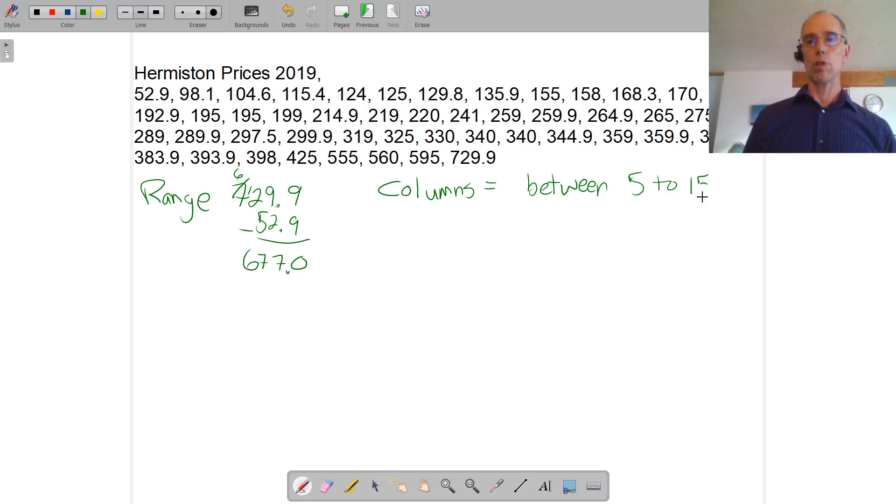So let's suppose I'm going to try eight columns. So I'm going to group this data into eight. Besides the number of columns and the range, I also need to know how many numbers there are. Sometimes that helps too. And n is usually how many. And I have 49 home prices here.